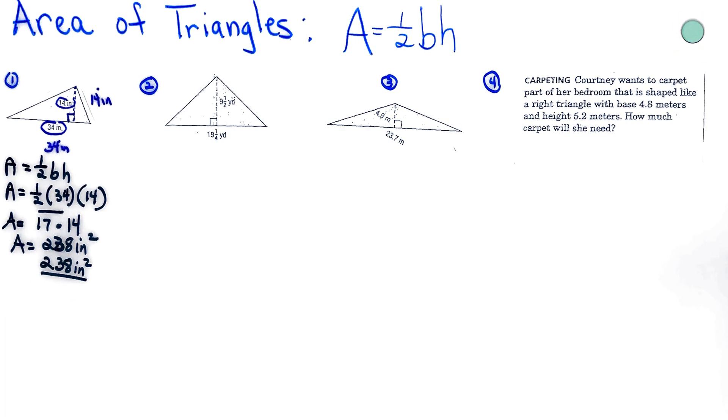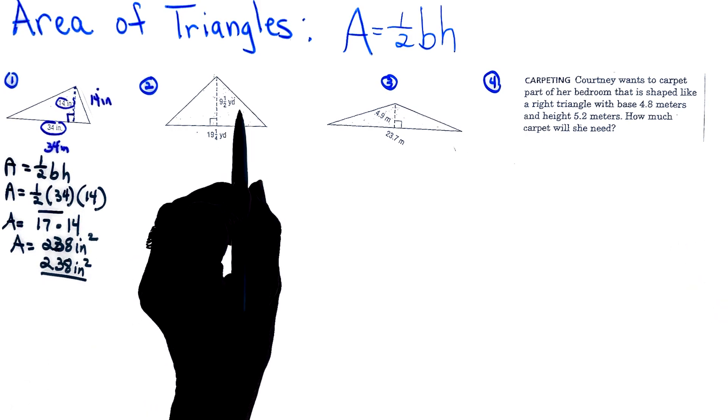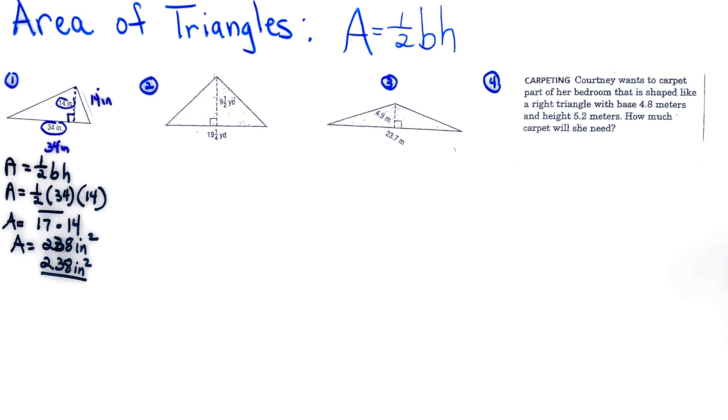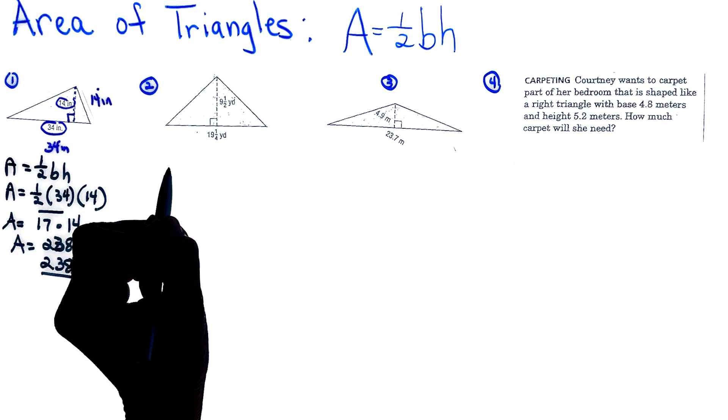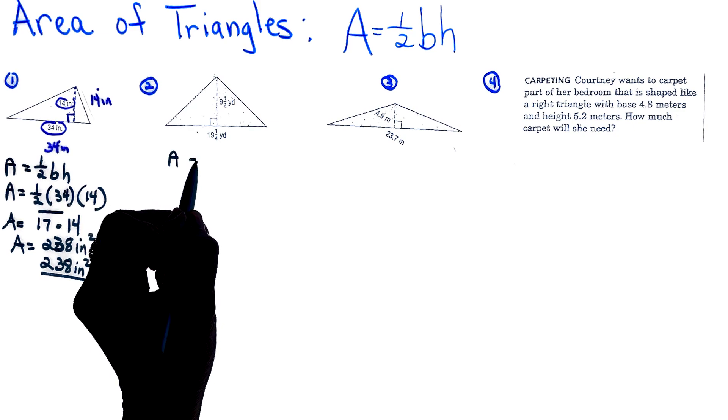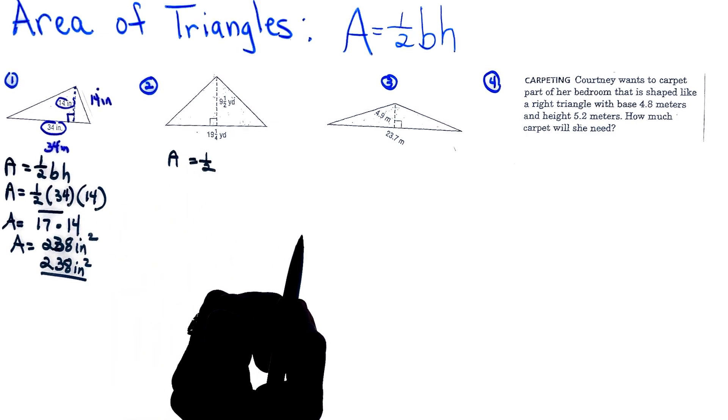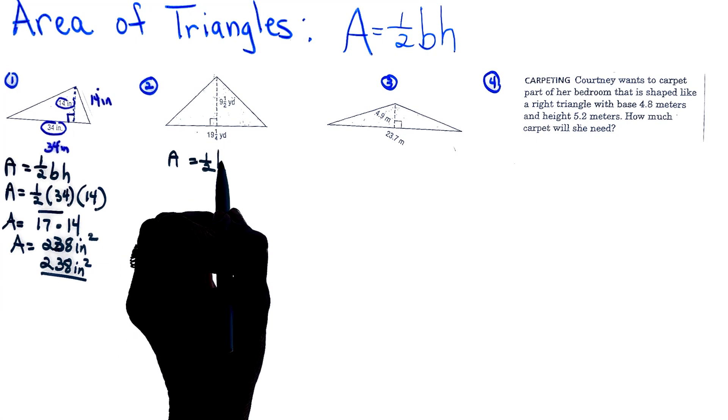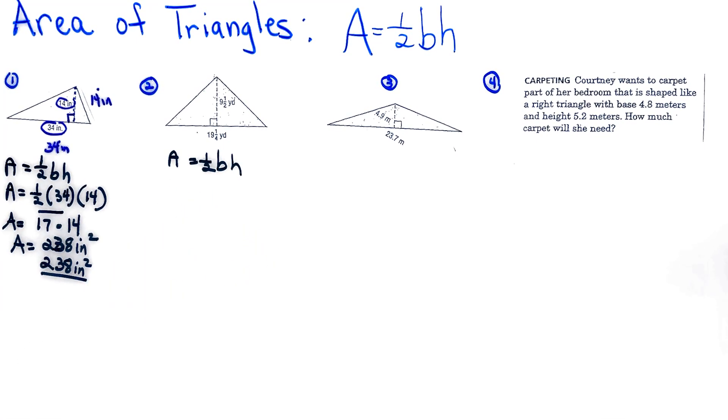Looking at the next problem, notice there's fractions there. It all depends if you feel comfortable working with fractions or you want to change them to decimals. I do tend to change my fractions to decimals as I'm working these problems, but you could solve it with the fractions. I'm writing my formula: area is one-half base times height.